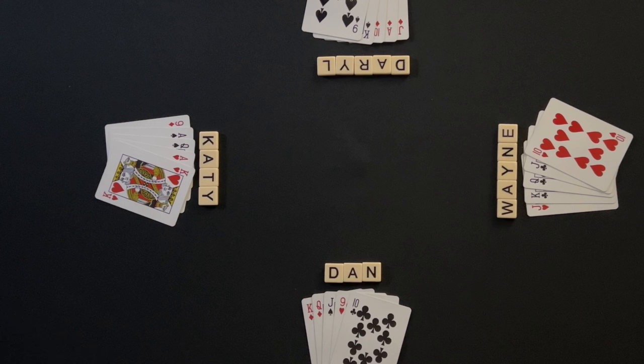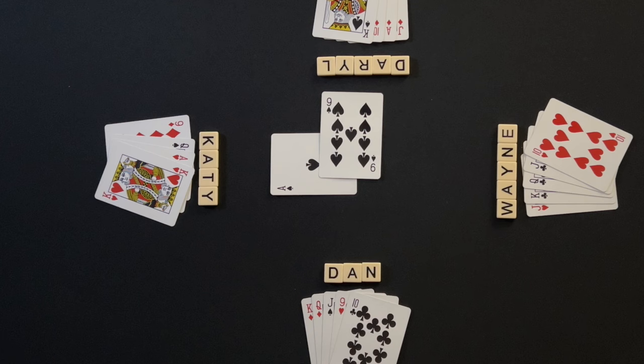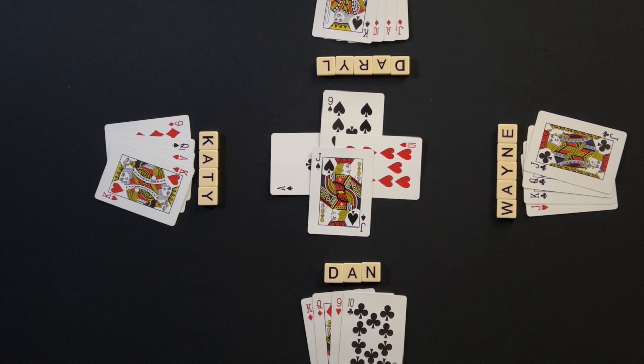The object of Euchre is to score points. Points are scored by taking at least 3 out of 5 tricks in a round. During game play, tricks are created by each player playing a card into the middle. The player who played the highest ranking card wins the trick.